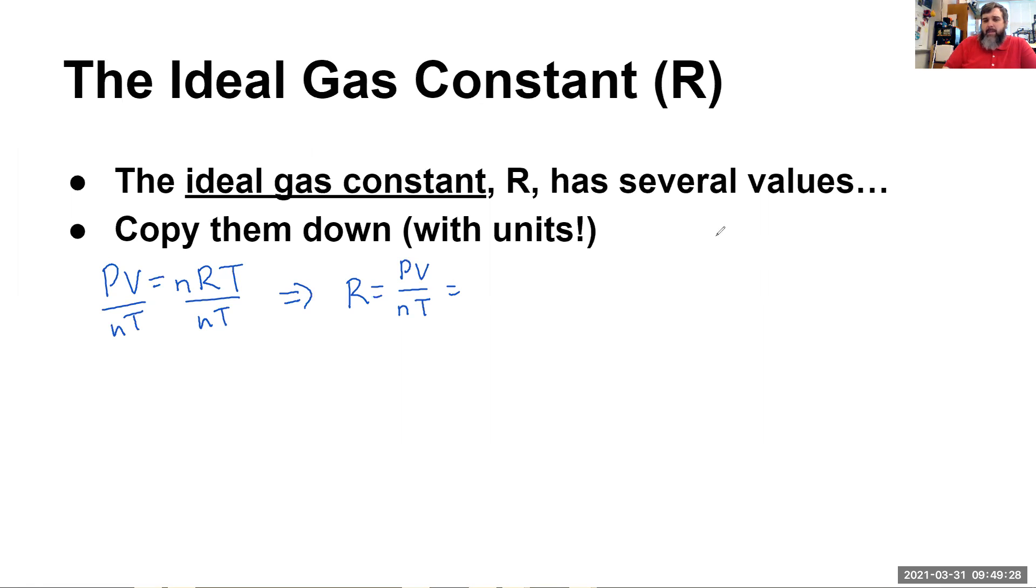So I don't know how much you remember or not, but there's a set of conditions called STP. And STP is zero degrees Celsius and one atmosphere. Zero degrees Celsius and one atmosphere. So let's use those values. And we also know that at STP, one mole of any gas occupies 22.4 liters of space. So using these values based around standard temperature and pressure, STP.